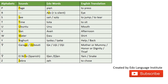When someone is called 'IYOBO,' it's usually a short form, because the full name is 'IYOBOOSA,' which means God's help. 'OSA' is God in EDO language, so 'IYOBOOSA' means God's help. 'IYOBO' on its own means help or assistance.